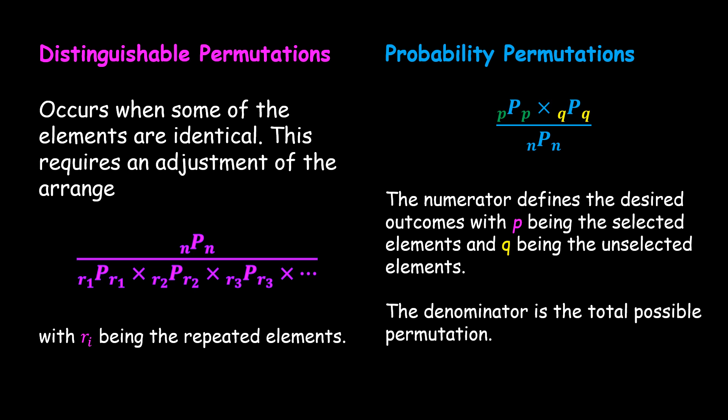We will also work with problems involving distinguishable permutations. This occurs when some of the elements are identical. This requires an adjustment of the arrangement, which is shown in the formula.